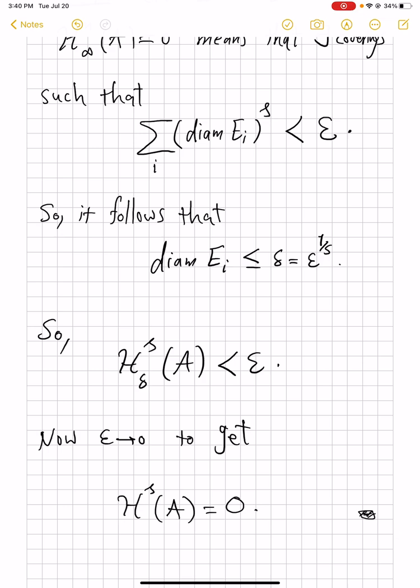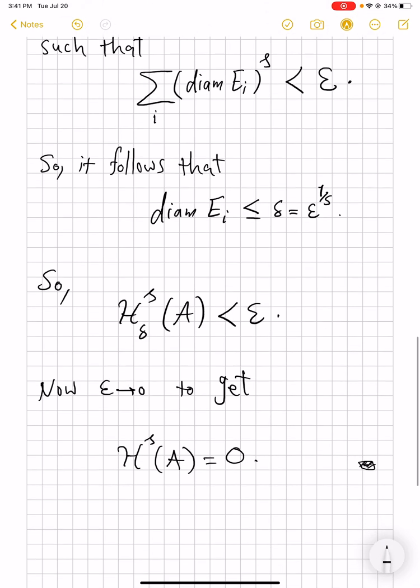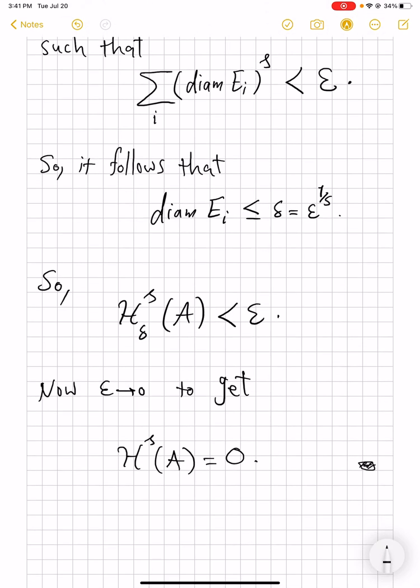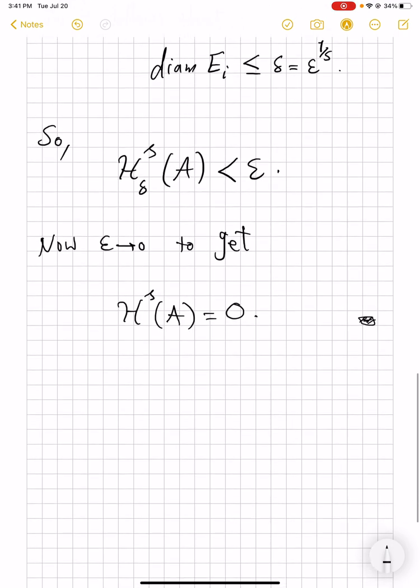So, that's the proof that content being zero gives the full measure being zero. And usually, it's easier to work with the content because you do not have to worry about the diameters of the coverings. The Hausdorff measure per se, by definition, requires first dealing with contents and then taking limits.